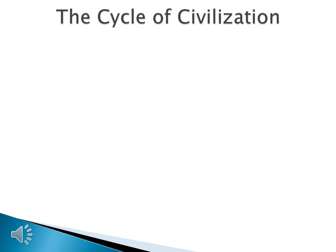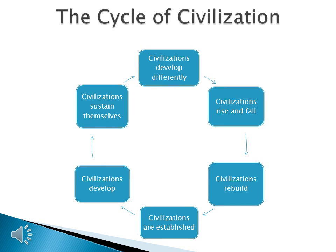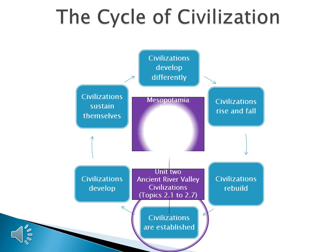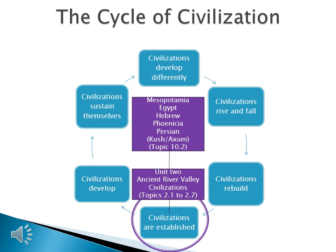Welcome to the World History 1 End of Course Review on Ancient River Valley Civilizations. We're going to start at the beginning of the Cycle of Civilization. We learned that civilizations are established, and to do this, we looked at Unit 2, those Ancient River Valley Civilizations, Topics 2.1 to 2.7. We looked at the civilizations in Mesopotamia, in Egypt, and the Hebrews, the Phoenicians, and the Persians. We're also going to add two non-traditional civilizations to the mix: Cush and Aksum, Topic 10.2.